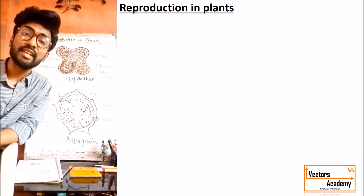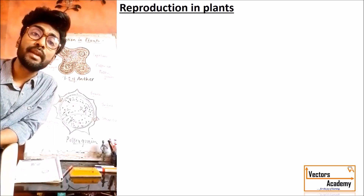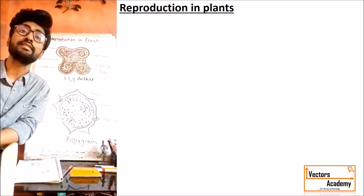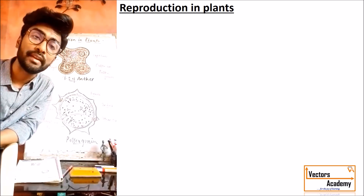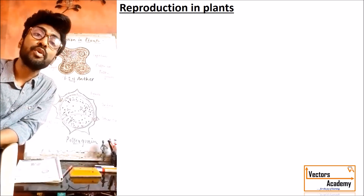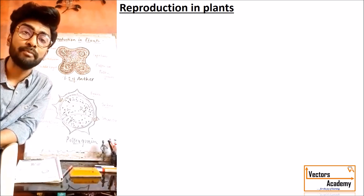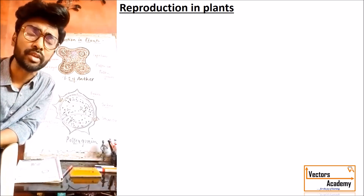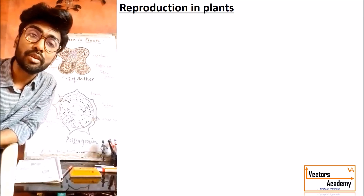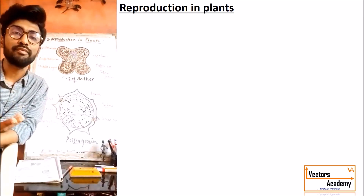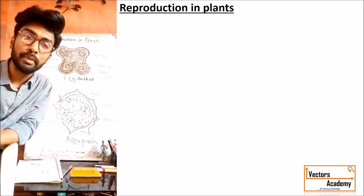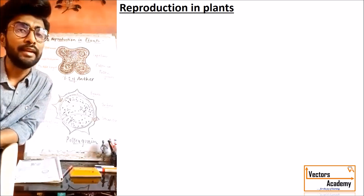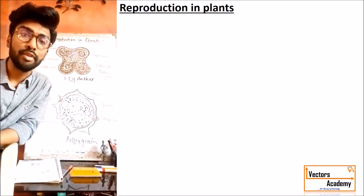Sexual reproduction generally takes place with the help of sex gametes. The male parent and female parent are involved, so it is called amphomixis — 'ampho' meaning both and 'mixis' meaning mixing. Whatever individuals are formed during sexual reproduction may not be exactly similar to the parent cell, and it is a slow method of reproduction.